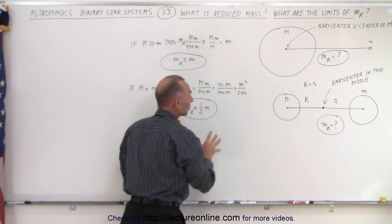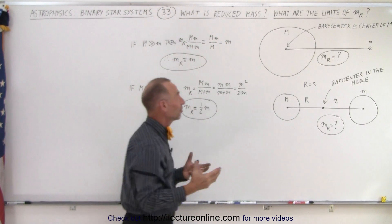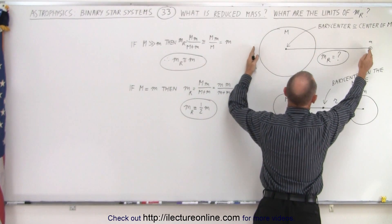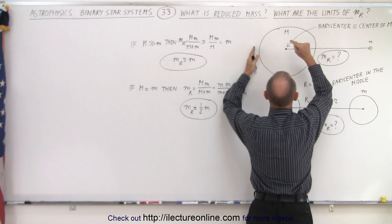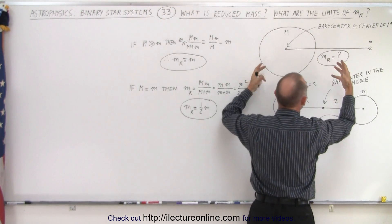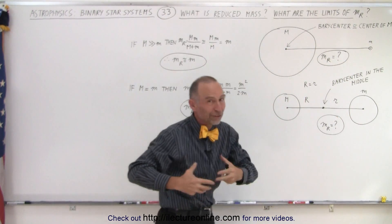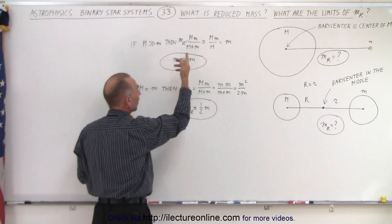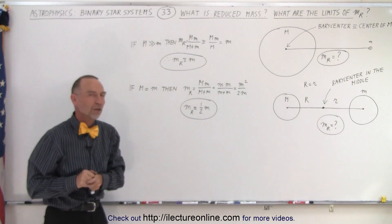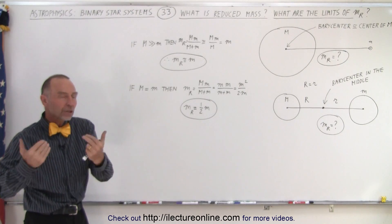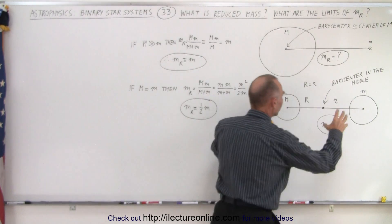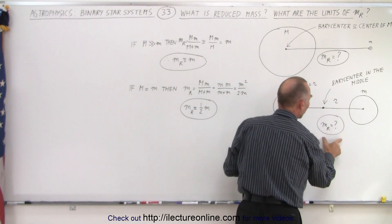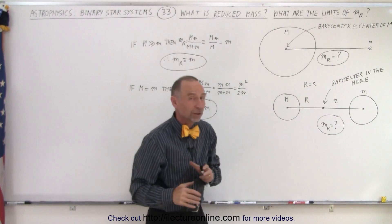In other words, if we have a situation where the large object is so large and the small object comparatively so small that the barycenter happens to be right at the large object, then we go to our normal situation where we don't need the reduced mass — and that's why the reduced mass is actually the same as the mass of the small object. But if we go to the other extreme, if we make both of them the same size, such as the large mass equals the small mass, what does the reduced mass become?